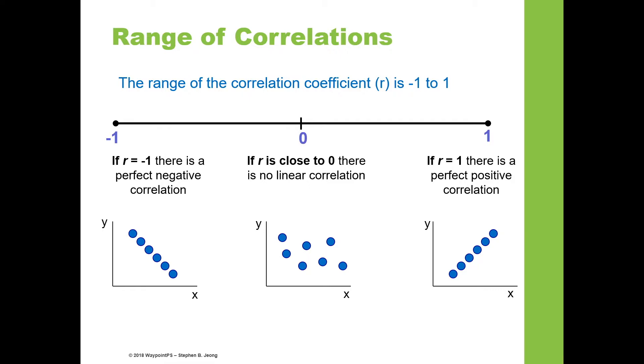Correlation will range anywhere from minus 1 to plus 1. You'll rarely find correlation of 1 or minus 1. Most correlations will be somewhere in between, like plus 0.27 or minus 0.45, somewhere in between these two ranges.